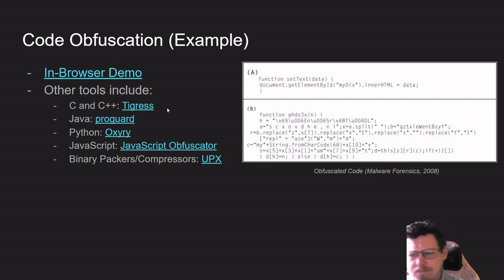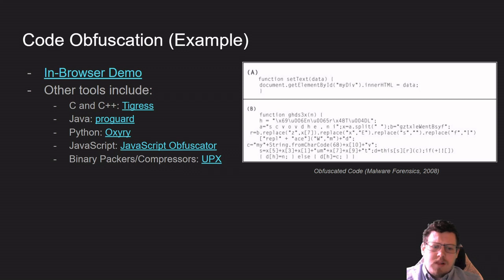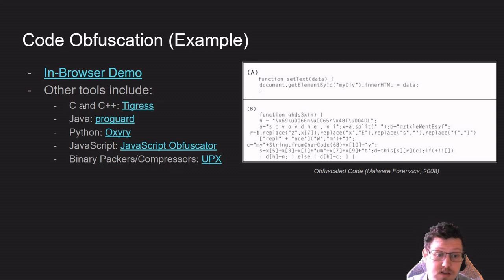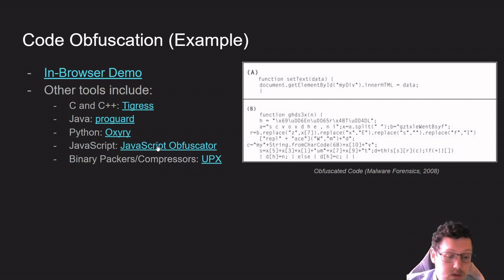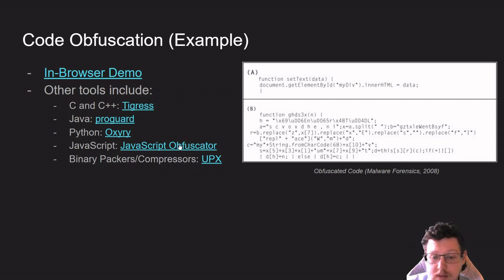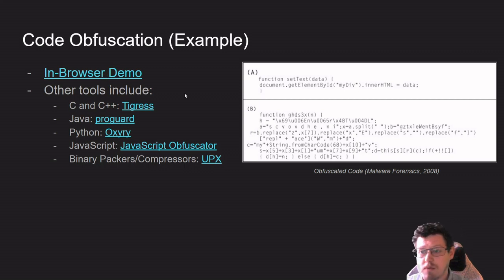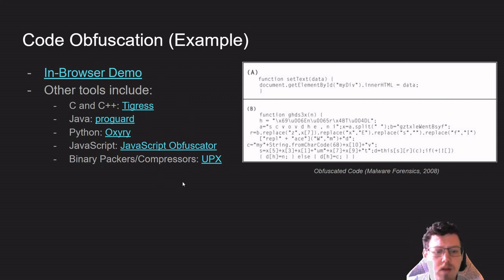There are obfuscators for all sorts of programming languages. Tigress is the most commonly used one for C and C++, ProGuard is for Java, Python has Pyarmor, and JavaScript has several options including JavaScript Obfuscator. There's also an in-browser obfuscator I'm going to show you in a moment.